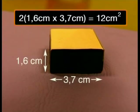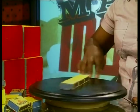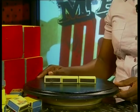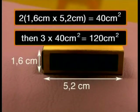We need to base our estimate on what we know about the different types of surface. We have only two of these small surfaces which are 1.6 cm times 3.7 cm. That came to 12 cm² if we round it off. We have 6 of these longer surfaces — that is three times more than we had before. We had about 40 cm², so that's about 3 times 40, which is 120.